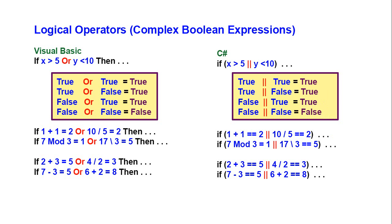We have another logical operator called OR. If one side or the other is true, the whole expression is true. If both sides are true, the whole expression is true. It's only false if both sides are false.